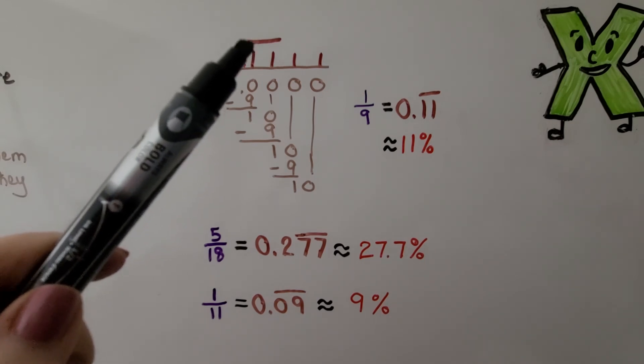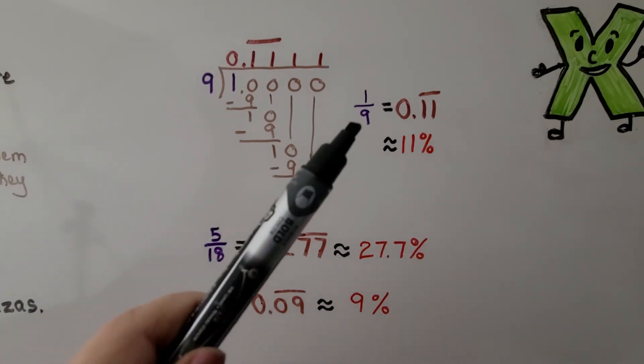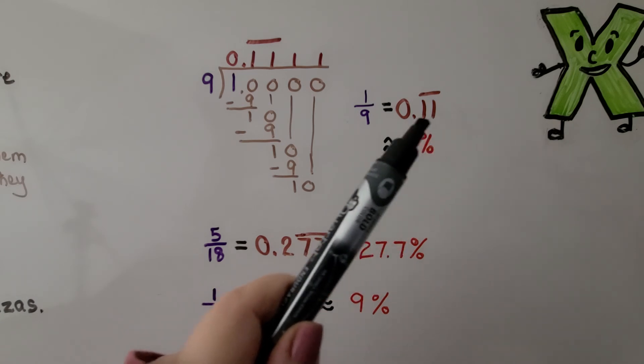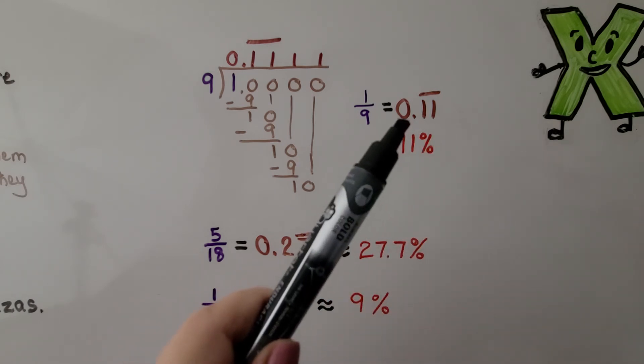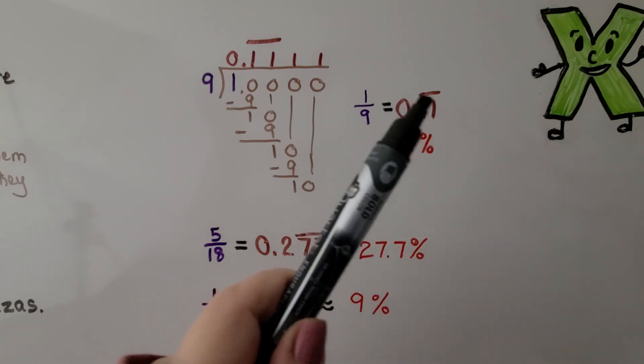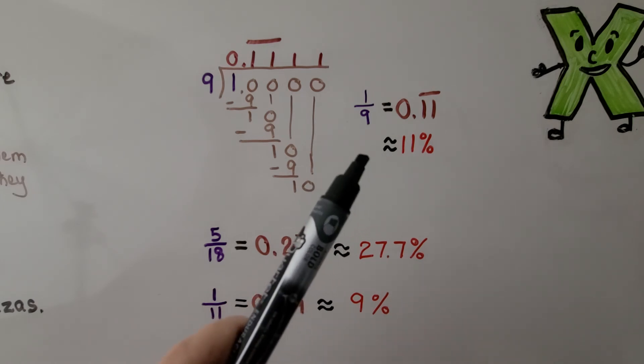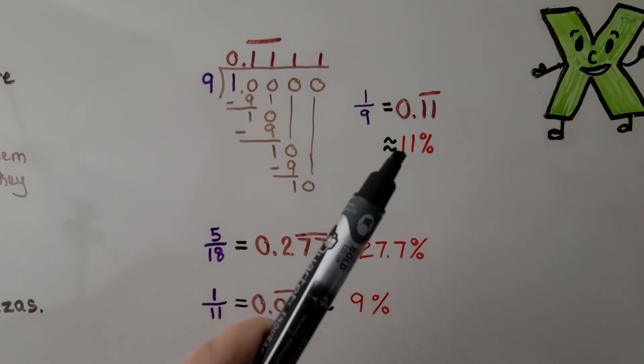There's quite a few fractions that if we try to turn them into a decimal using long division, we're going to have this bar over the repeating digits. For one-ninth, we get a repeating one over and over again. So we can just say it's 0.11 with a bar over the top, and use an approximation symbol as 11 percent.